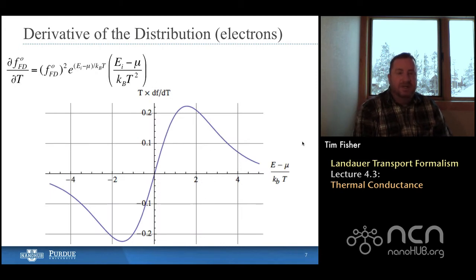For electrons, the situation is a little bit different. Again, we're plotting that derivative of the distribution function normalized by temperature to make it dimensionless. And I think the first thing that stands out in this graph is that it goes positive and negative. And the reason for that is we actually are spanning across energy space that's intersecting the chemical potential. So we're going below the chemical potential and above the chemical potential. You'll notice that the argument here is the scaled energy, E minus mu, divided by the thermal energy. And that's why it can go negative.